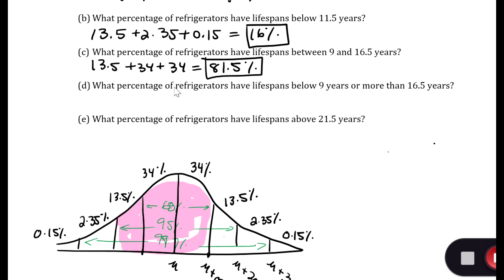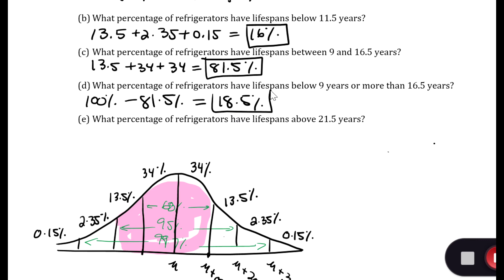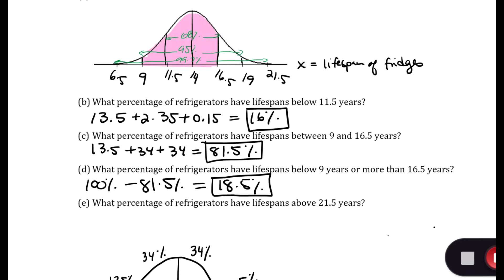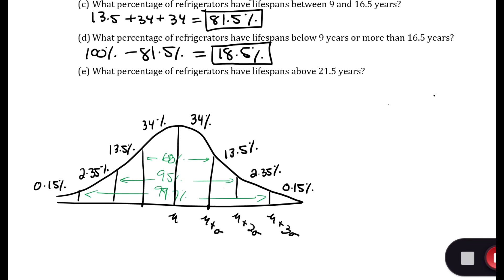What percentage of refrigerators have a lifespan below 9 or more than 16.5? That's just the complement of the previous answer: 100% minus 81.5% gives 18.5%. Then, what proportion have a lifespan above 21.5 years? That's three standard deviations above the mean, so it's just that small tail region: 0.15%.